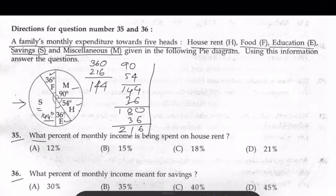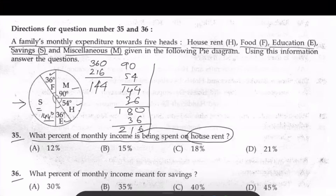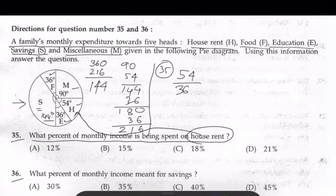What percent of monthly income is being spent on house rent? House rent percentage: the house rent degree is 54. So for Question 35, it's 54 out of 360 into 100% — that will be the answer.